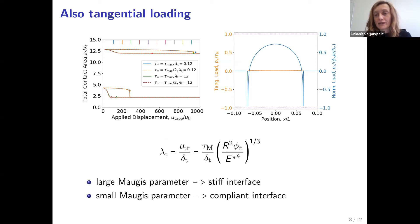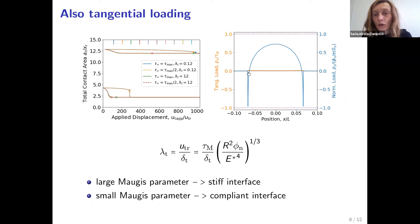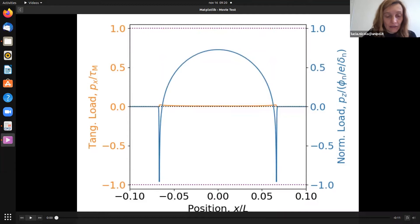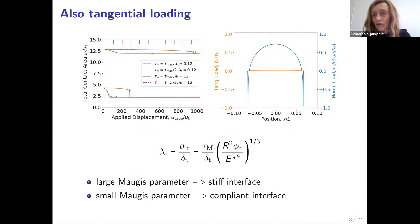Now this latter case, the case where there is some compliance at the interface, is the one that is the best at replicating the experimental observations by Chivert. So it is the case that I am now showing you in this movie where we see how the tangential pressure, which is in orange, changes during the simulation and how the normal pressure changes, which is in blue. So you see that at the edges of the contact, the traction increases quite slowly. At the same time, the normal pressure decreases. And then we reach the point in which the contact is all under the maximum traction that the interface can withstand.